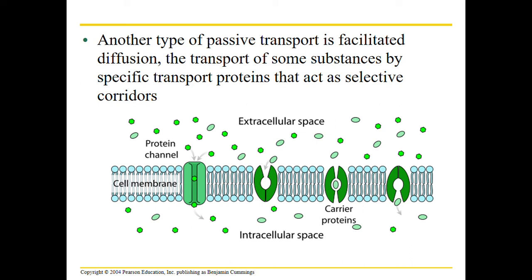Another type of passive transport is facilitated diffusion. This is still passive — still moving from high concentration to low concentration — but it's for molecules that can't pass the plasma membrane on their own. They need something like a transport protein to help them. For example, a protein channel provides an open space for the molecule to pass through, or a carrier protein grabs the molecule, changes shape, and moves it to the other side.